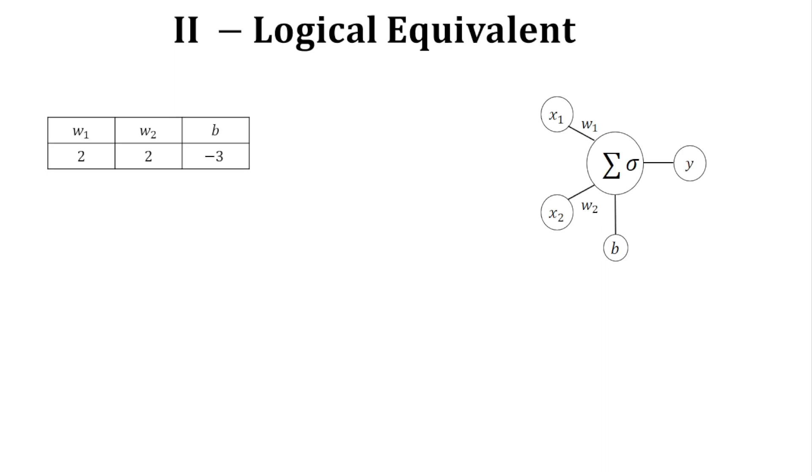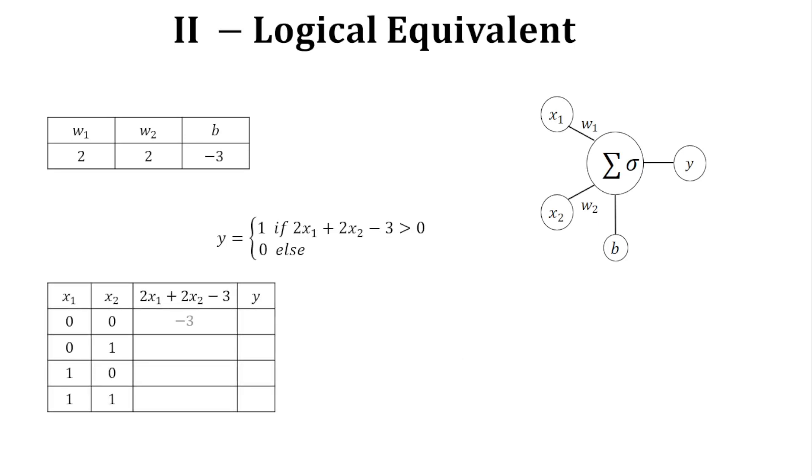Now another example with these parameters. The updated formula. The threshold, the output. Now what we have, the only place where y equals 1 is when x1 and x2 are equal to 1. So this is equivalent to the AND gate.